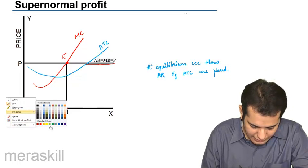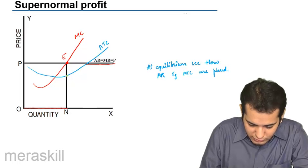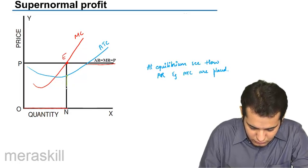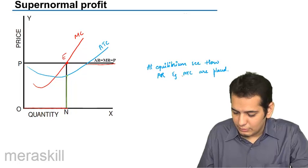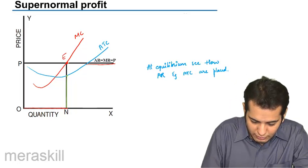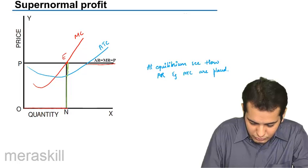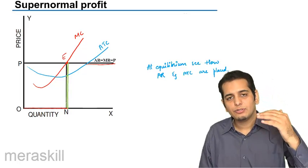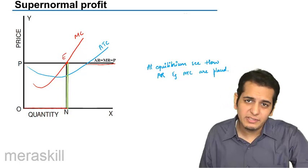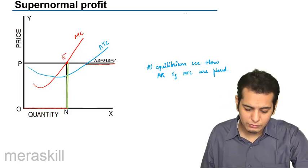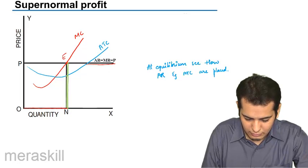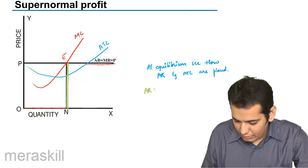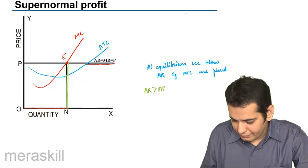What is the average total cost? The average total cost is this much. And what is the average total revenue? The average total revenue is this much, this whole. So average revenue exceeds the average total cost. Here we can see AR is more than ATC.